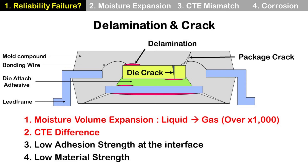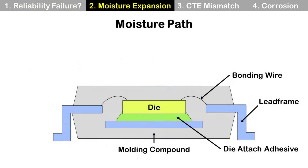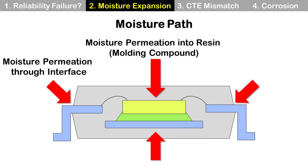Moisture is critical for reliability failure. Let's check how a package absorbs moisture. This is a typical lead frame package with die and molding compound. Moisture permeates through the molding compound and the interface between the lead frame and molding compound.